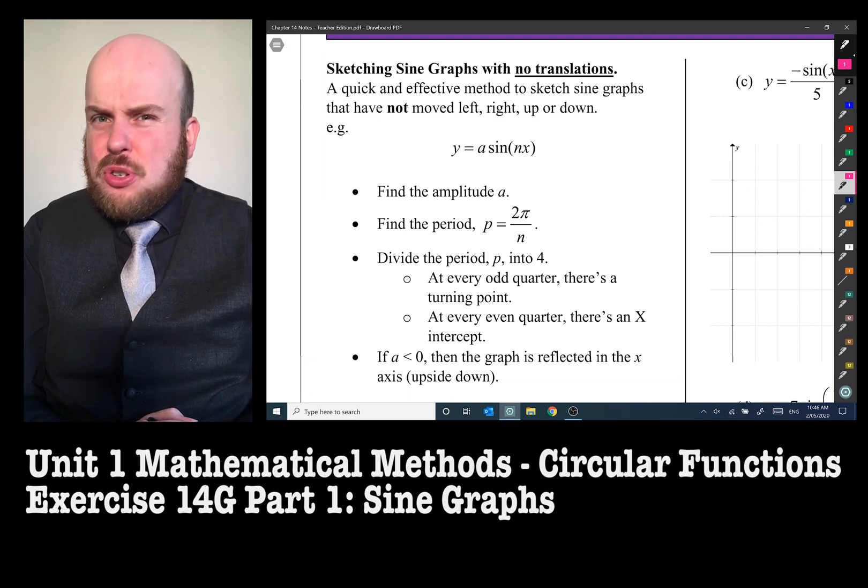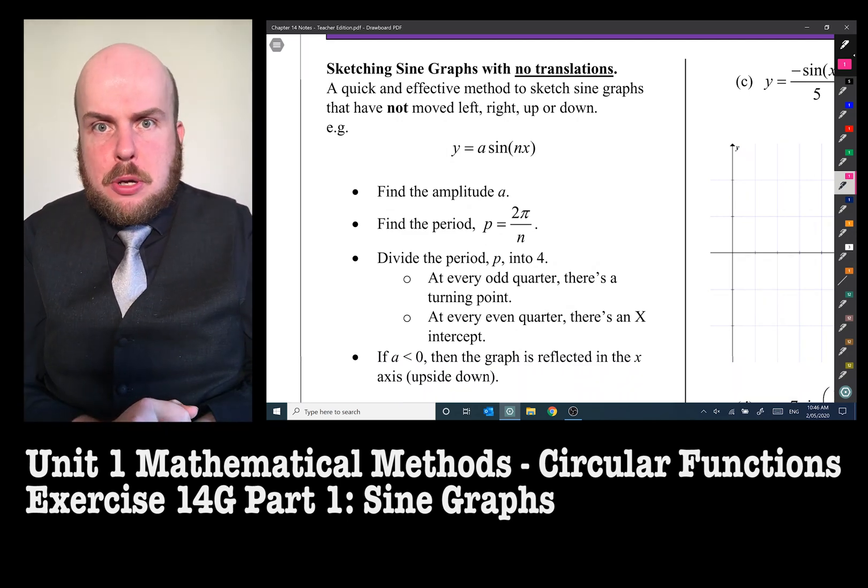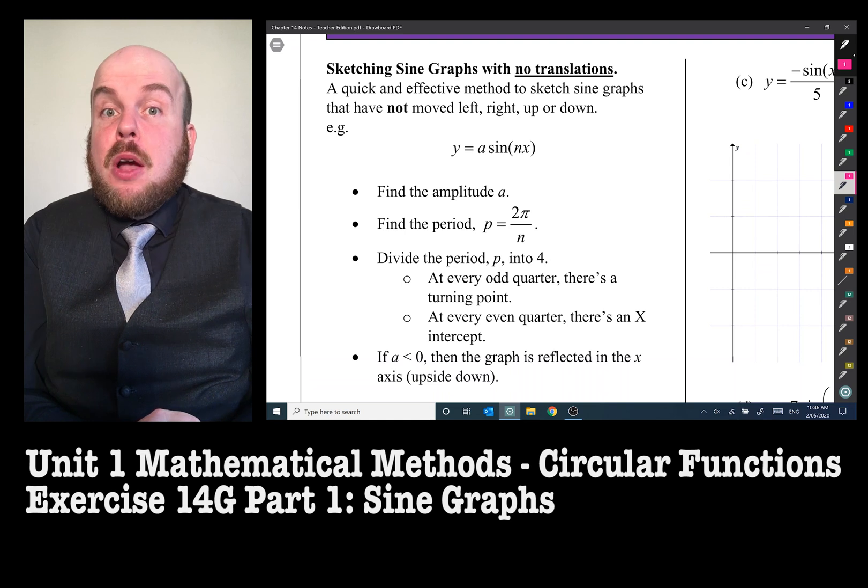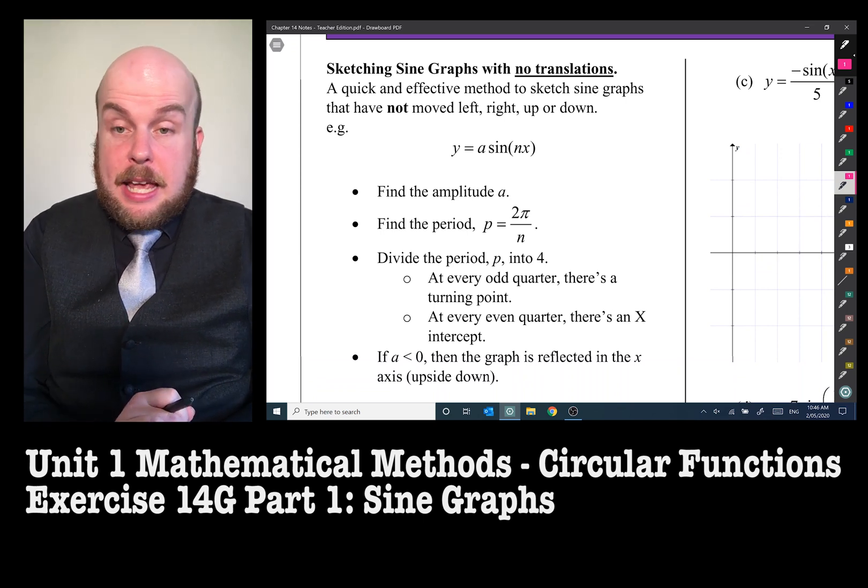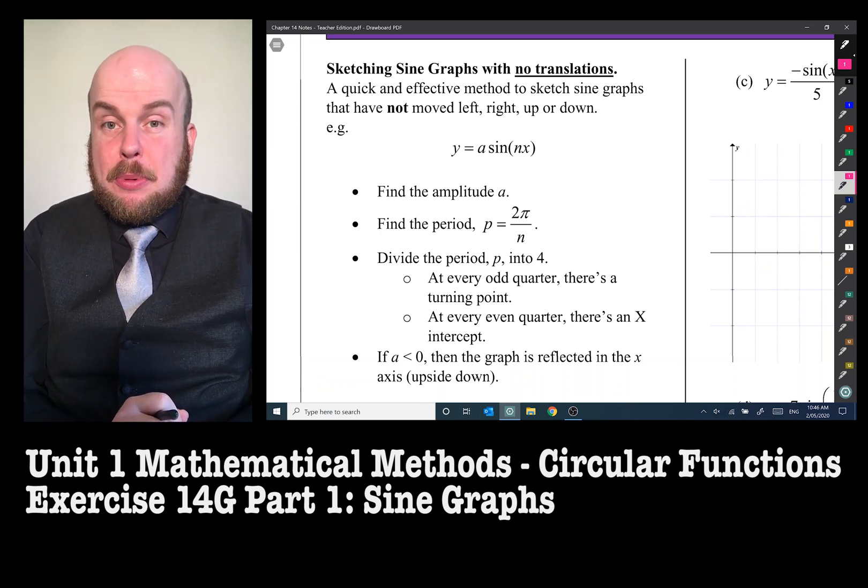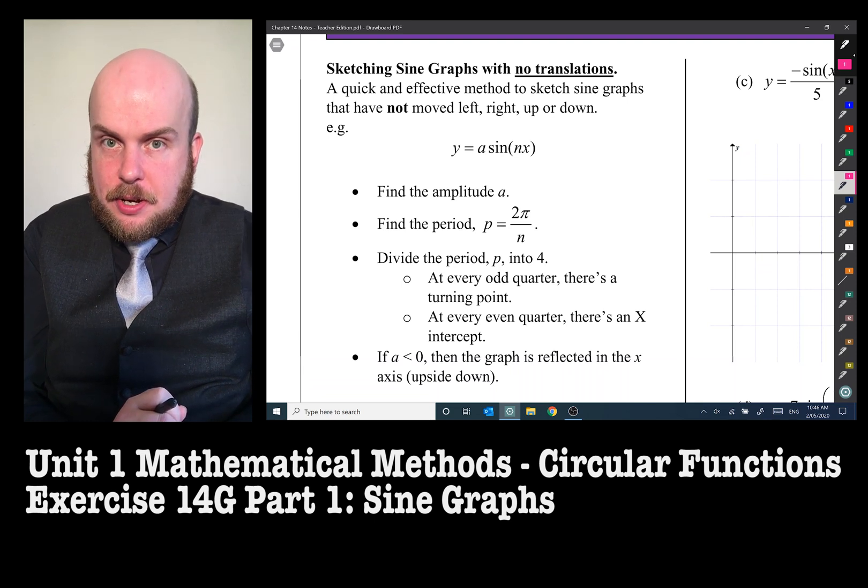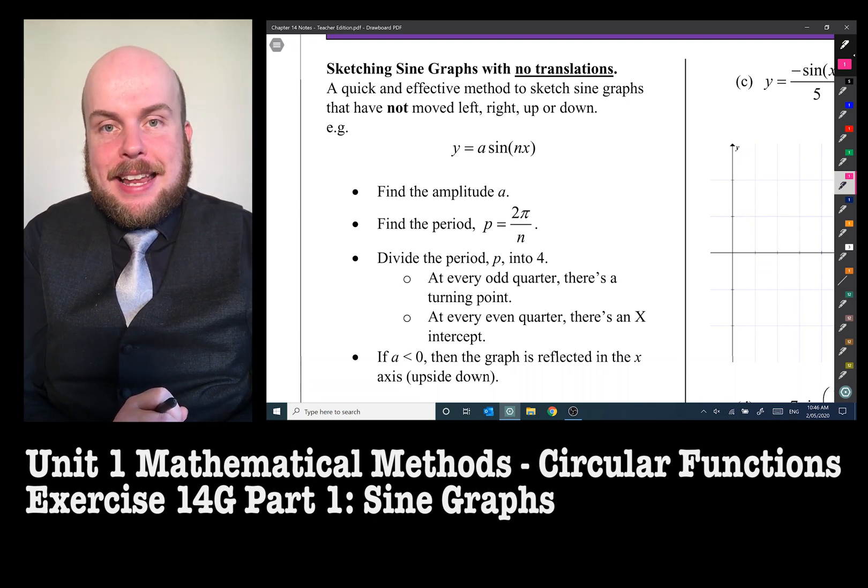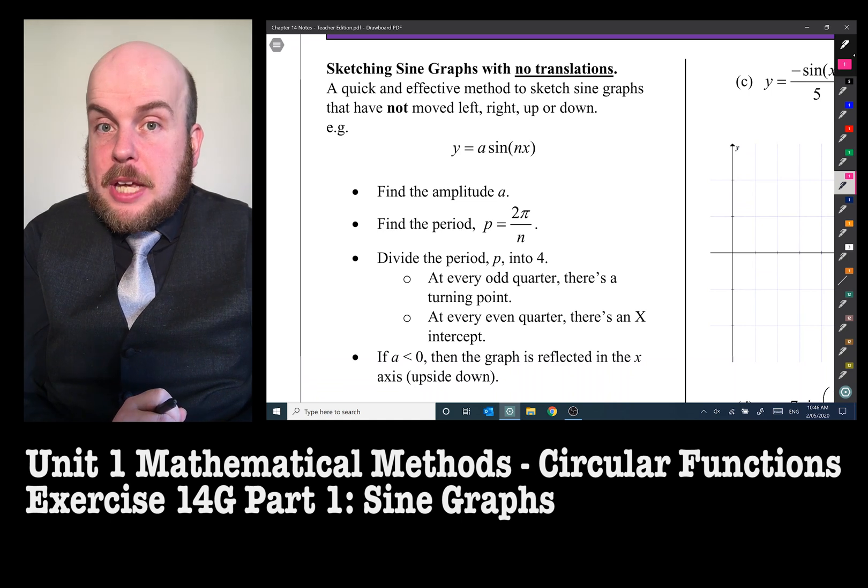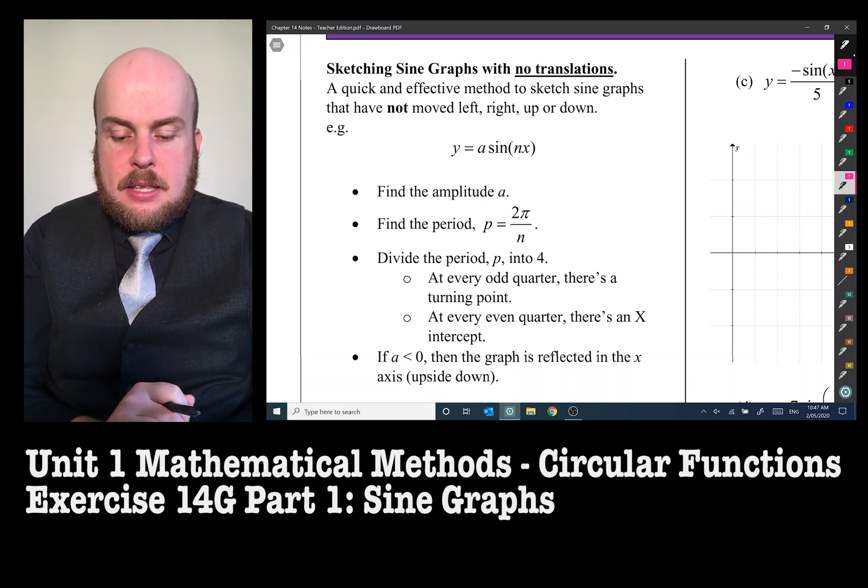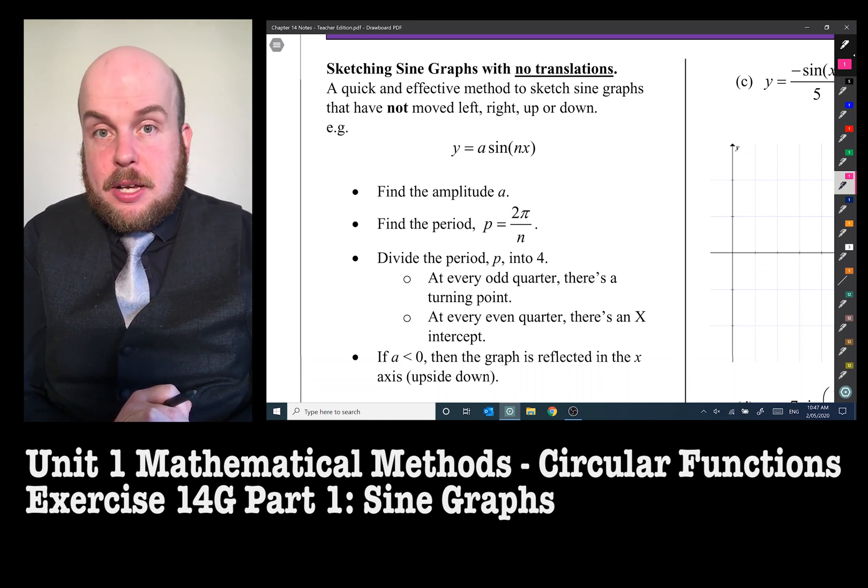When sketching sine graphs, it is usually not advised to make a table of values. Just like when you learn to do a parabola, you know how to do the sketch or learn how to do a cubic or a quartic or things like that. Similarly, with a sine graph, there are some ways and tricks and means to be able to do it rather quickly. One of the things you need to do is to find the amplitude, A, whatever number is at the front, find out what the period is, then divide that period into four segments. Because at every odd quarter, there's a turning point and every even quarter, there's an x-intercept. And if the value of A is less than zero, it is upside down. One small caveat with this quick way is we are assuming there are no translations so that the graph has not moved to the left or to the right or up or down.